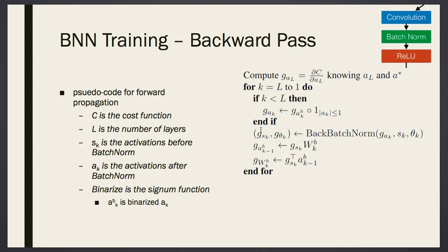So what we're going to do is cover this backward pass pseudo code. Before that, let's remember some variable names. C is the cost function, like L, the loss function. L is the number of layers. SK is the activations before batch normalization. AK is the activations after batch normalization. Binarize is the sigmoid function. And ABK is the binarized layer of AK, or GAB is the binarized layer of GA.